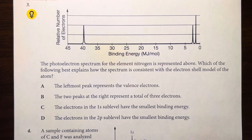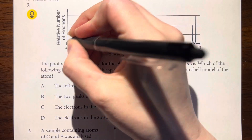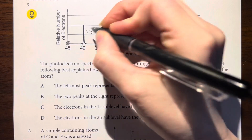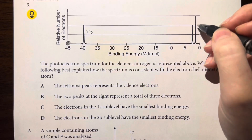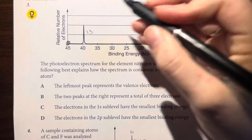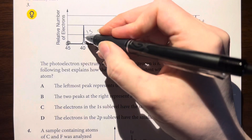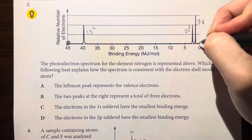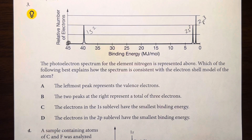The photoelectron spectrum for nitrogen is represented above. Which of the following best explains how the spectrum is consistent with the electron shell model of the atom? The nucleus is in this bottom left-hand corner. All spikes are proportional, and my valence electrons are as far from the nucleus as possible. We have 1s, then 2s, then 2p. They are proportional: 1s², 2s², and 2p³. I'll read through the answer choices to find what best matches.